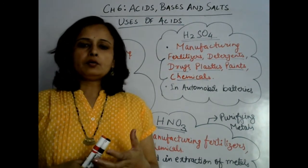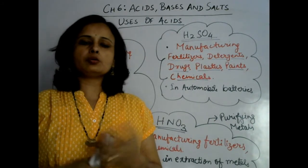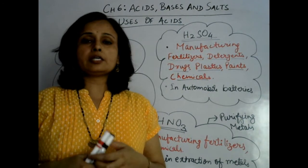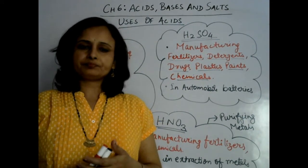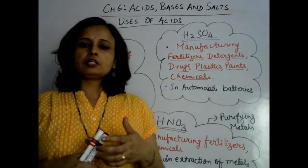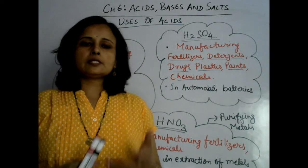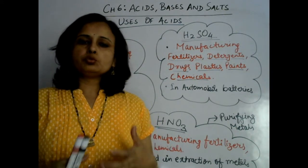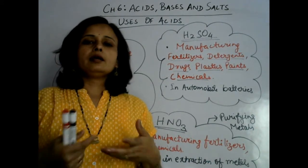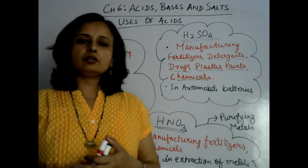Nitric acid is also used in purification of metals. Many kinds of metals like gold, silver, and even platinum, which are utilized for making jewelleries, are purified using nitric acid. So these are the uses of different kinds of acids, and they play an important role for all such kinds of work.